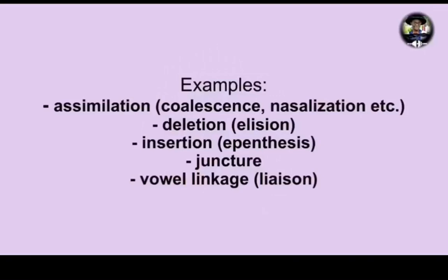We'll also examine juncture — the open juncture and the closed juncture — familiarizing ourselves with the fact that pauses at syllable boundaries can actually alter the meaning of words and phrases. Additionally, we'll look at vowel linkage or liaison, where an extra vowel or the approximant is used to link adjacent phrases.